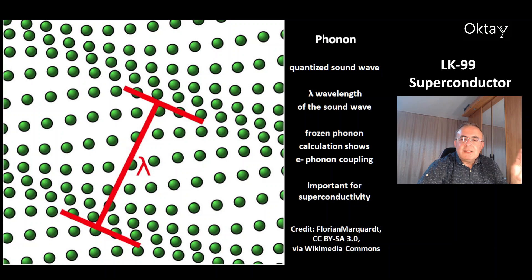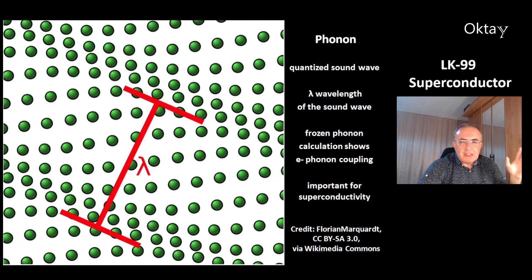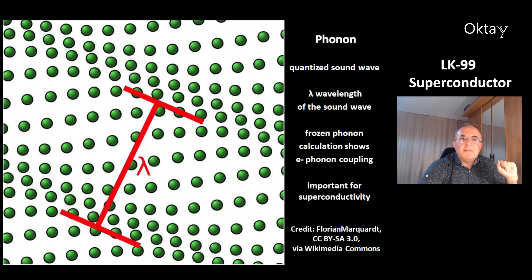This is a nice picture of a phonon — a phonon is a quantized sound wave. In this picture, lambda is the wavelength of the sound wave. There is a calculation called a frozen phonon calculation, which shows that there is electron-phonon coupling, and this is very important for superconductivity.